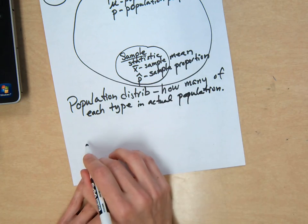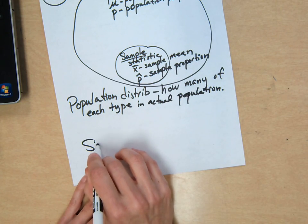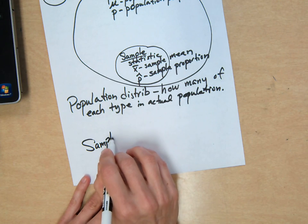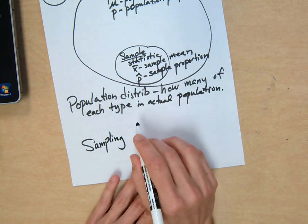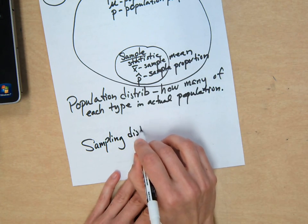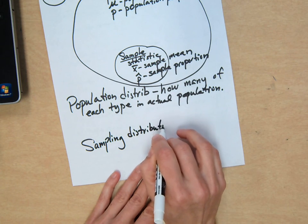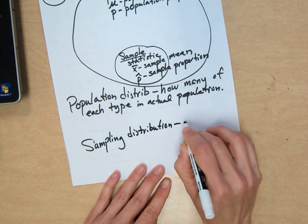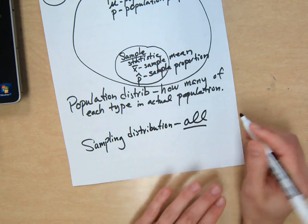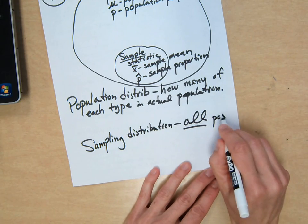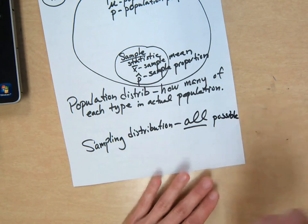So the sampling distribution is what we use to get information about the population. So sampling distribution is all, but here's the key - it means all possible samples. Usually we need to use software to generate that.